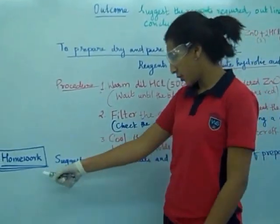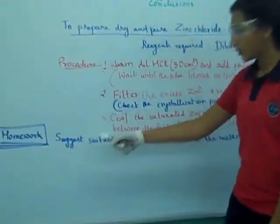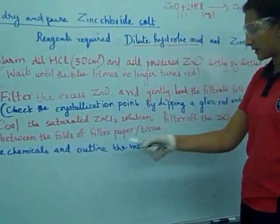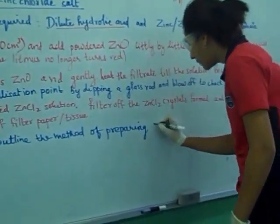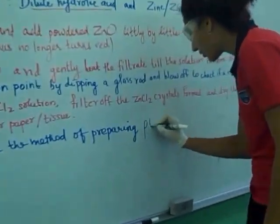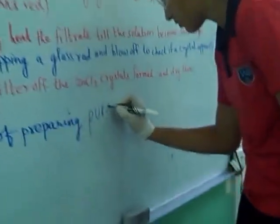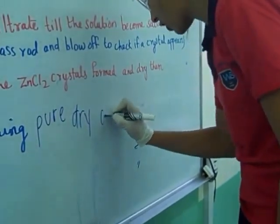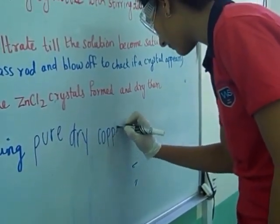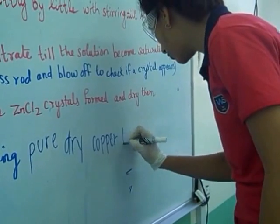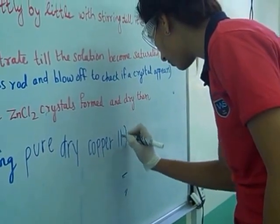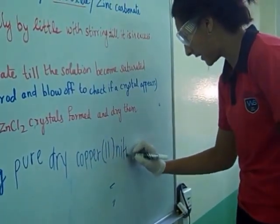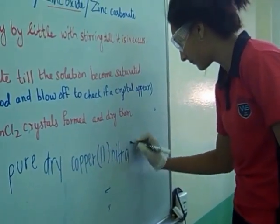Now for the homework, you all have to suggest suitable chemicals and outline the method of preparing pure, dry copper(II) nitrate salt.